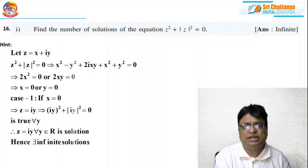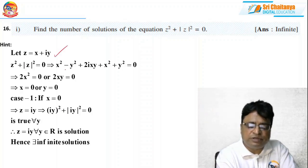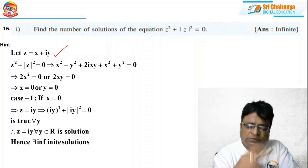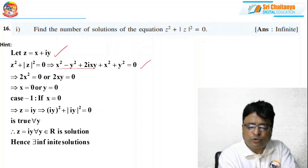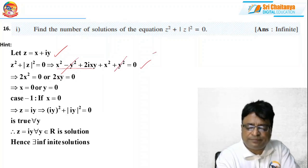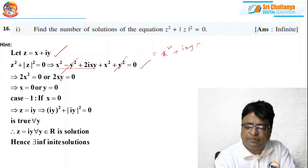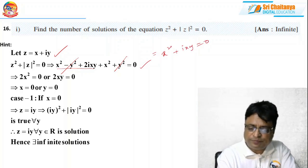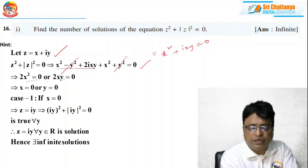z² + |z|² = 0 means z² = (x + iy)² = x² − y² + 2ixy, and |z|² = x² + y². So we have x² − y² + 2ixy + x² + y² = 0. The y² terms cancel, giving real part: 2x² and imaginary part: 2xy. Equating real and imaginary parts to zero: x² = 0 and 2xy = 0.